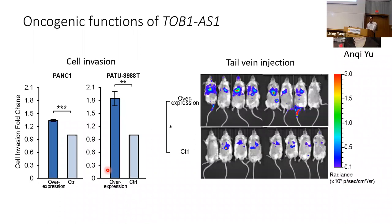Question: For the transcription-replication collision project, you said the tandem duplications are large — how large are they? Answer: They are over 100 KB but less than 5 megabases in that range. Question: How can the collision happen across such a large distance? Answer: We are still unclear on exactly what causes the collision. Is it really an R-loop sitting there blocking DNA replication? We're not entirely sure. By the proximity ligation assay, we measure the collision between DNA polymerase and RNA polymerase directly — that's the best assay available for measuring collision.